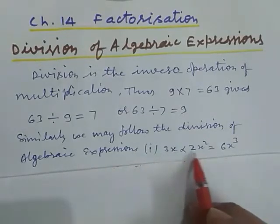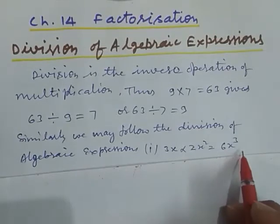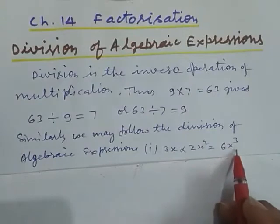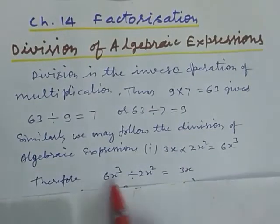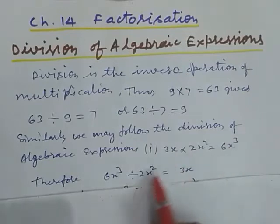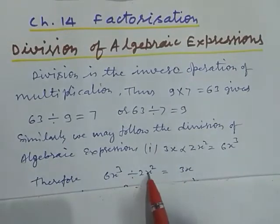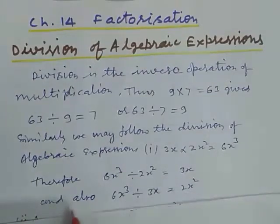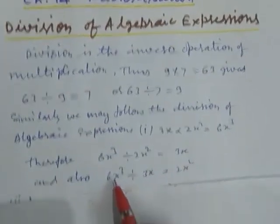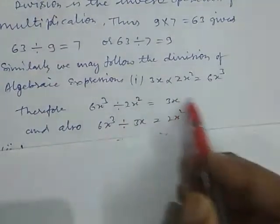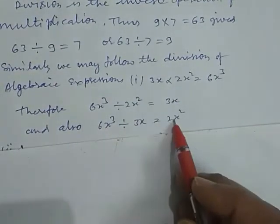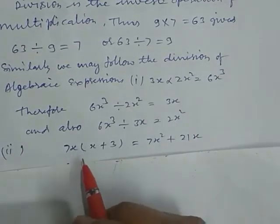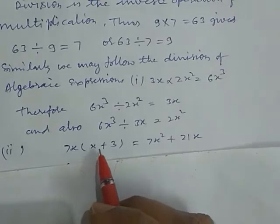3x into 2x square equals 6x cube — this is the multiplication of algebraic expressions. Therefore, 6x cube divided by 2x square equals 3x. And also, 6x cube divided by 3x gives us 2x square. This way we can perform our algebraic expression division.